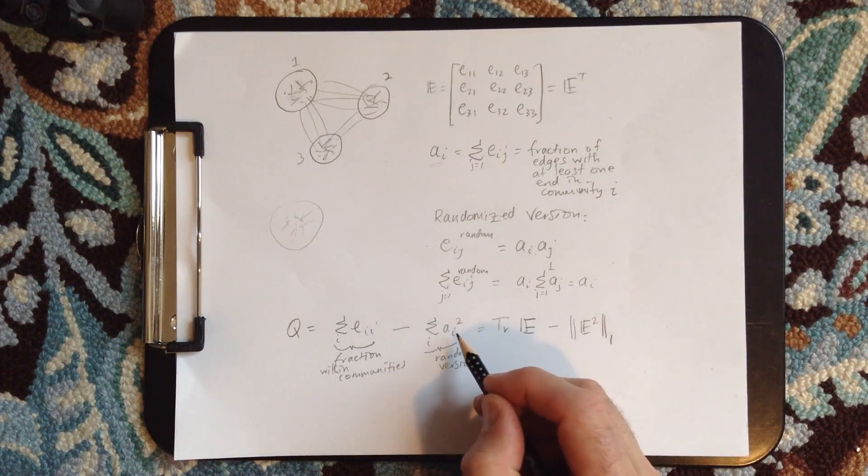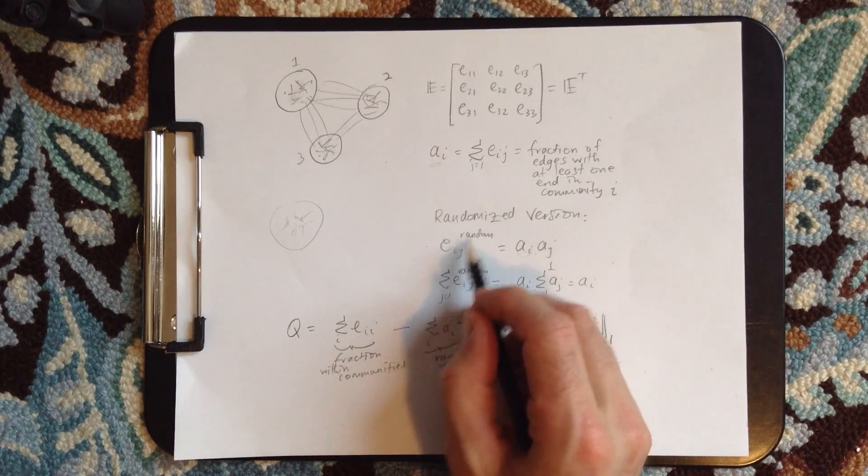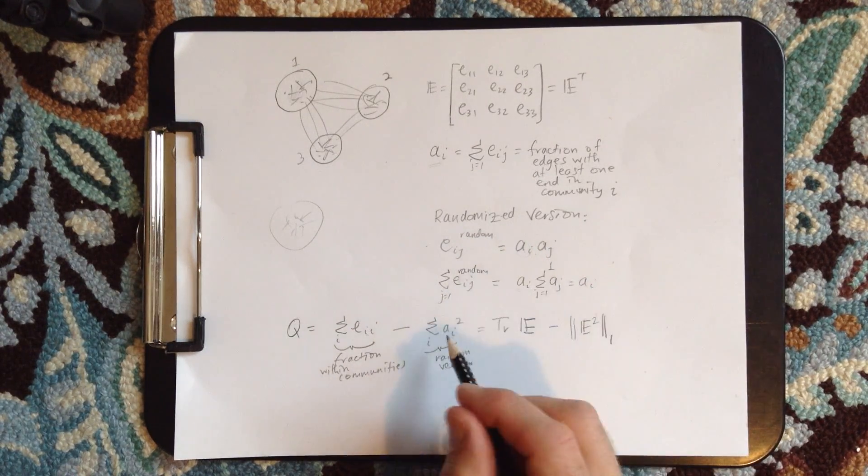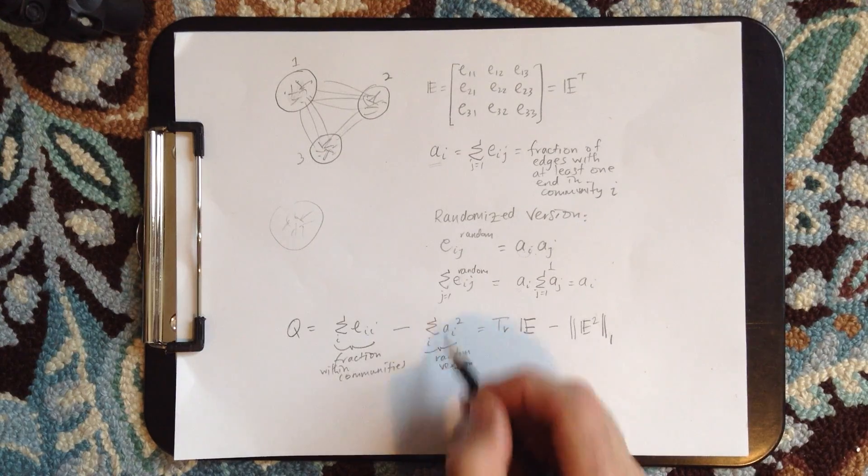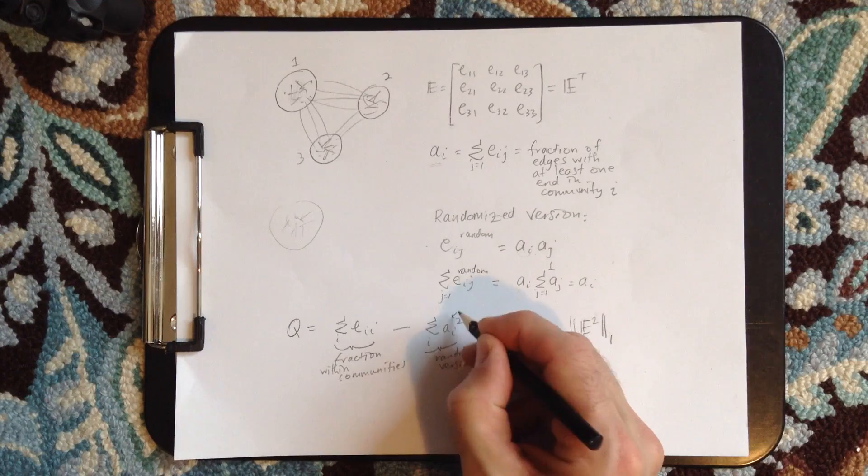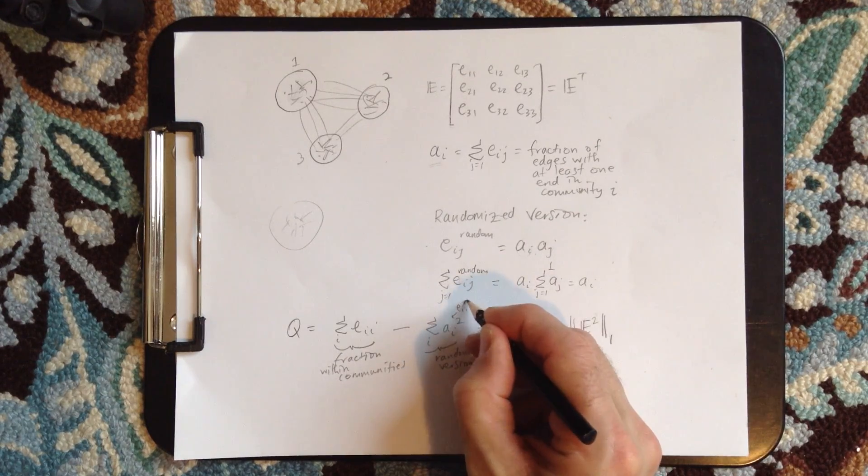And then we have to subtract off the randomized version, and EIJ random is AI times AJ, so we want AI squared. So this is the sum here. So this is what EII looks like. So this is EII random.